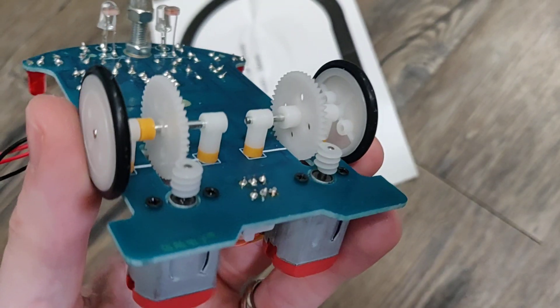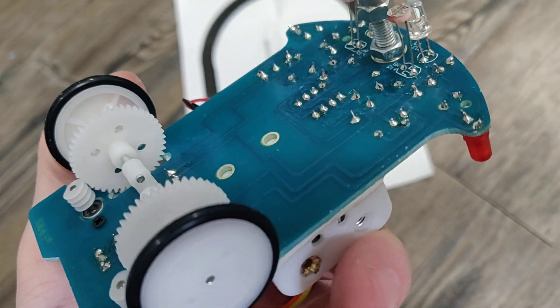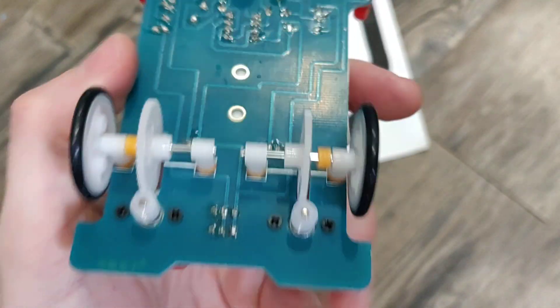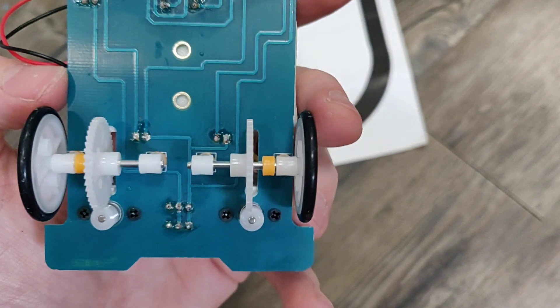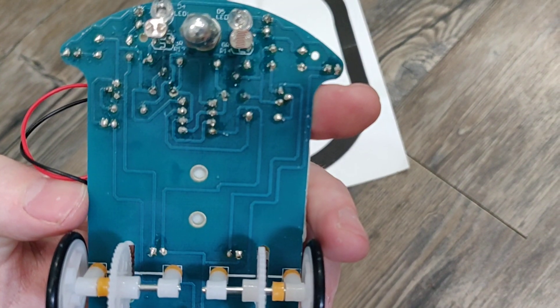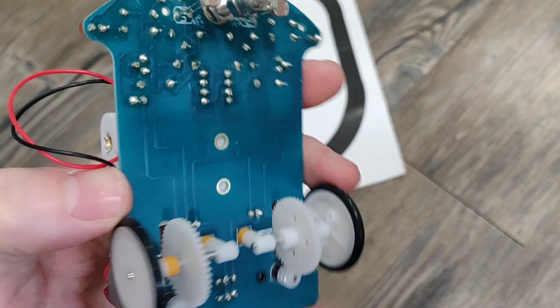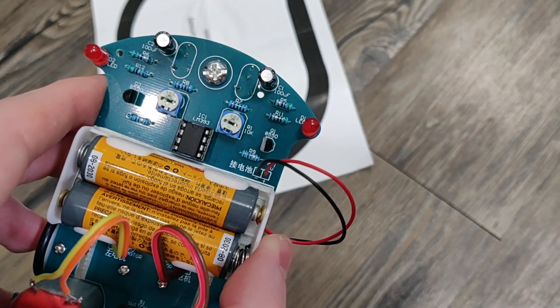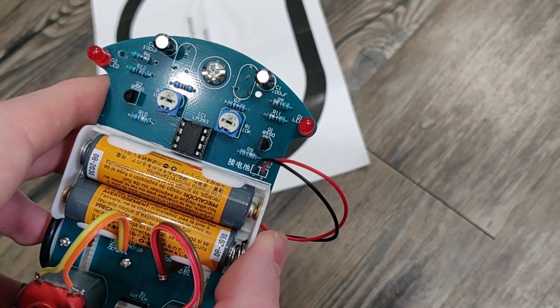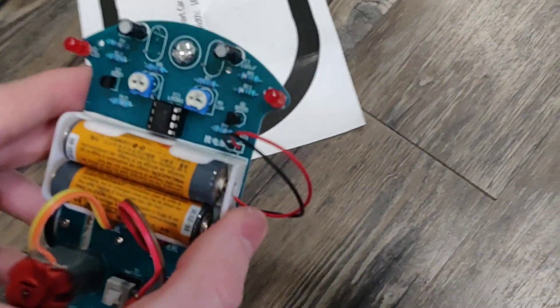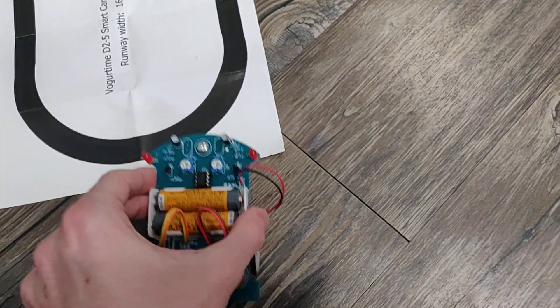We had one slight issue where we accidentally melted the teeth on one of the gears, so it's going to be a little noisy, but I think it'll just adjust for that as it goes. We also put the chip socket on backwards, but that only matters in terms of visually aligning things. The pins don't care. We got the chip in the right spot, pretty sure.